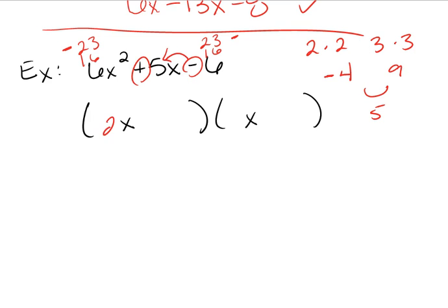Okay. Well, since we used 2 and 3, we'll put 2 and 3 here. 2 and 2 means the 2 goes over here, 3 over here. 4 is negative, and that 9 was positive. All right.